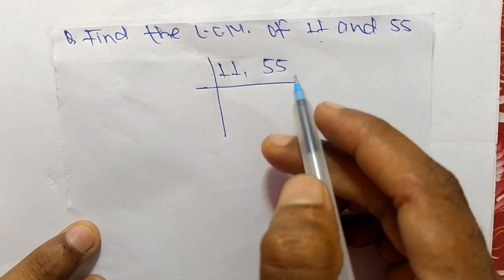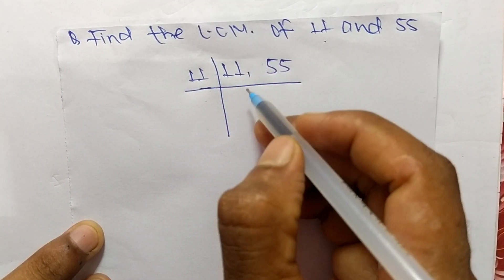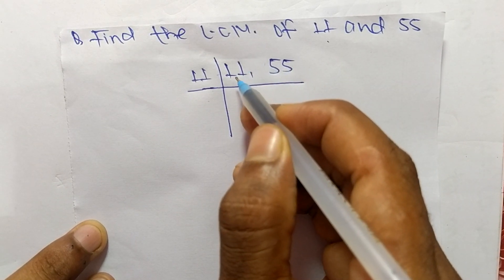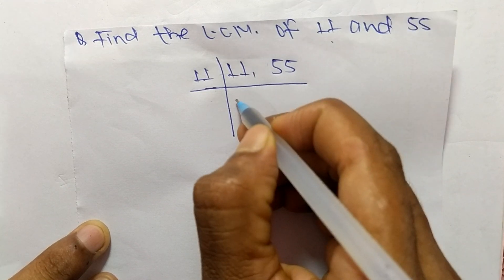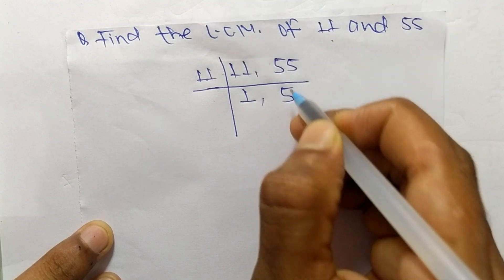11 and 55. The number is 11. If we take 5, then 5 can divide 55 but can't divide 11. So 11 can divide both numbers. 11 times 1 equals 11, and 11 times 5 equals 55.